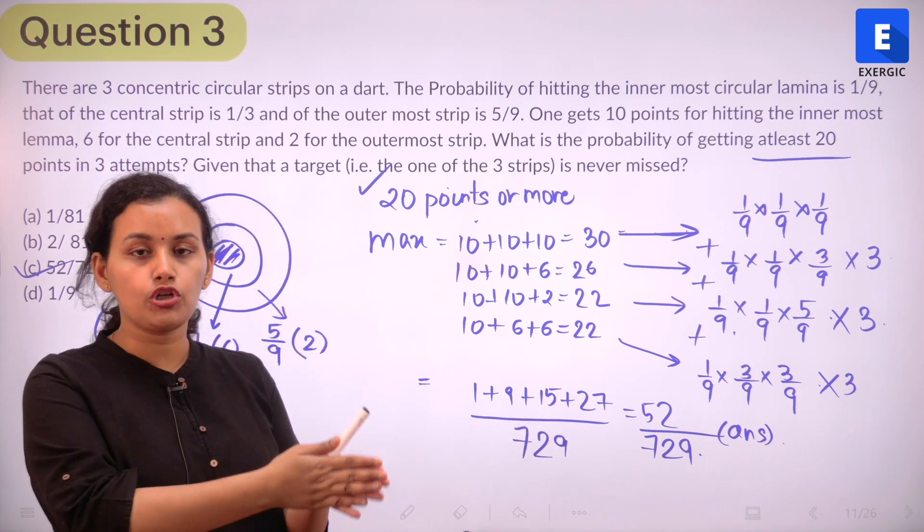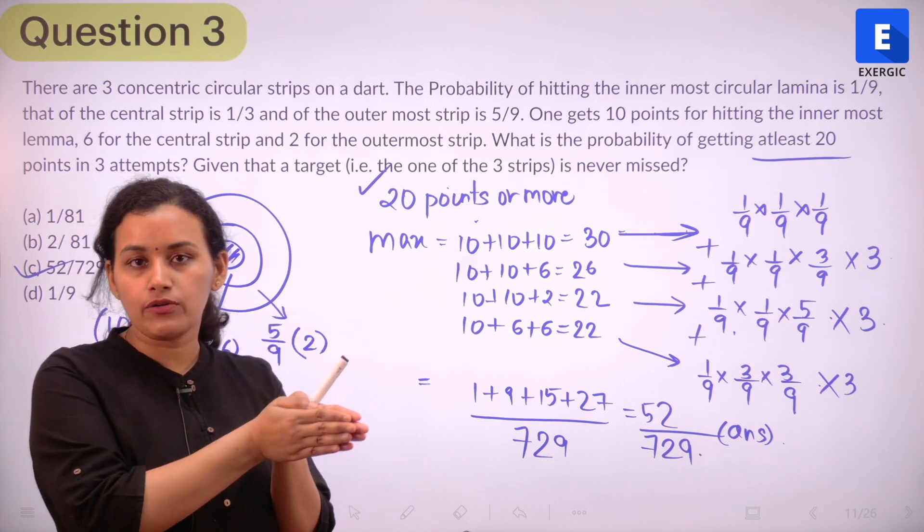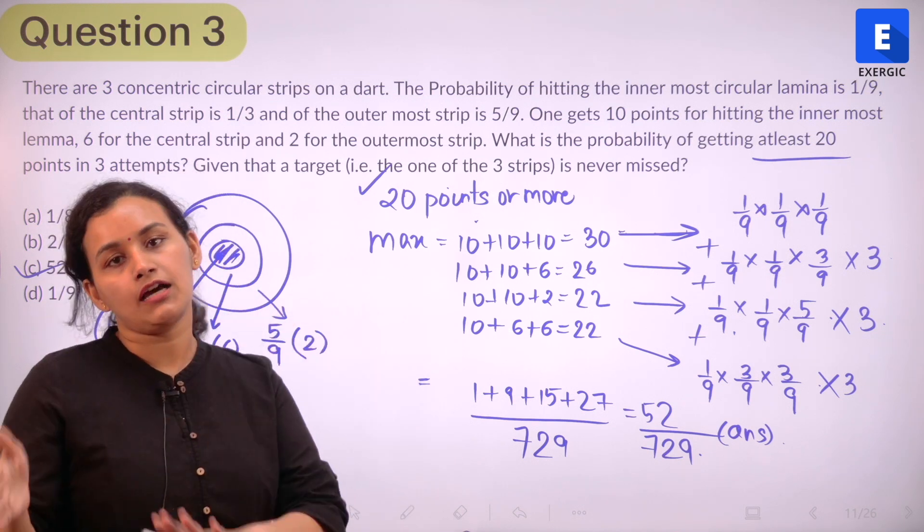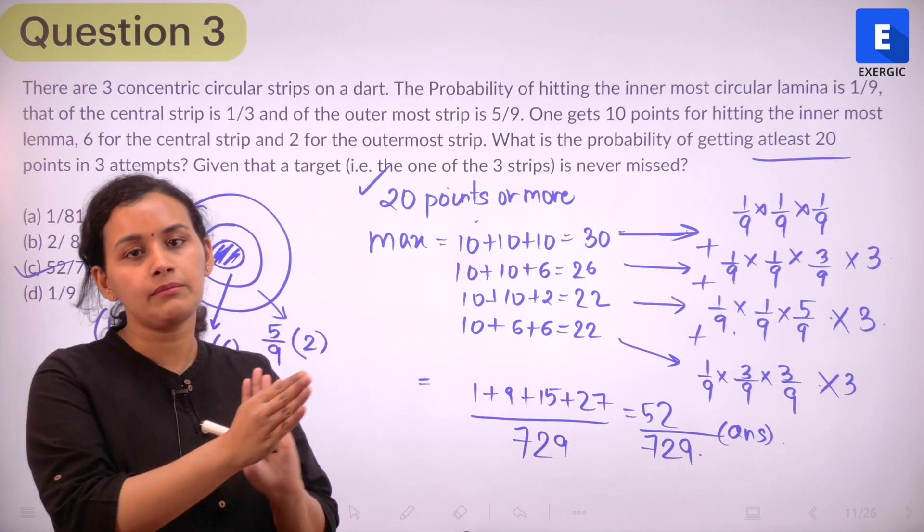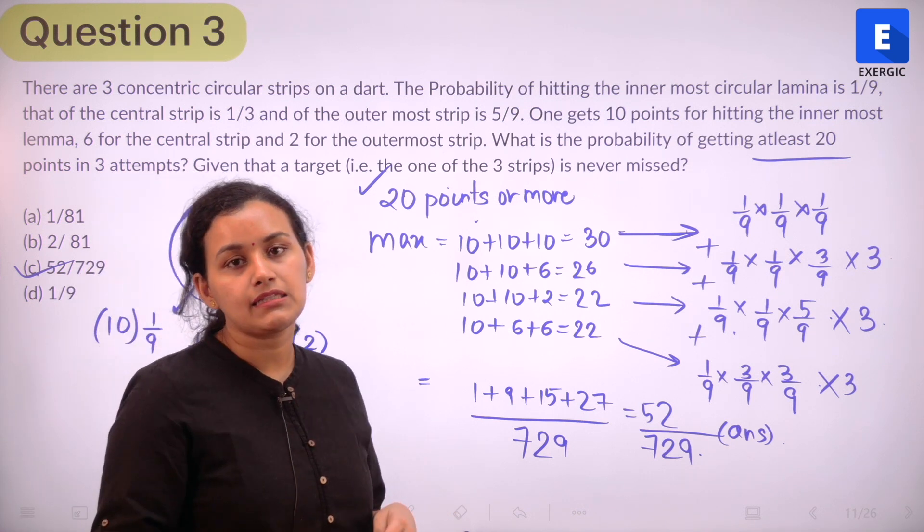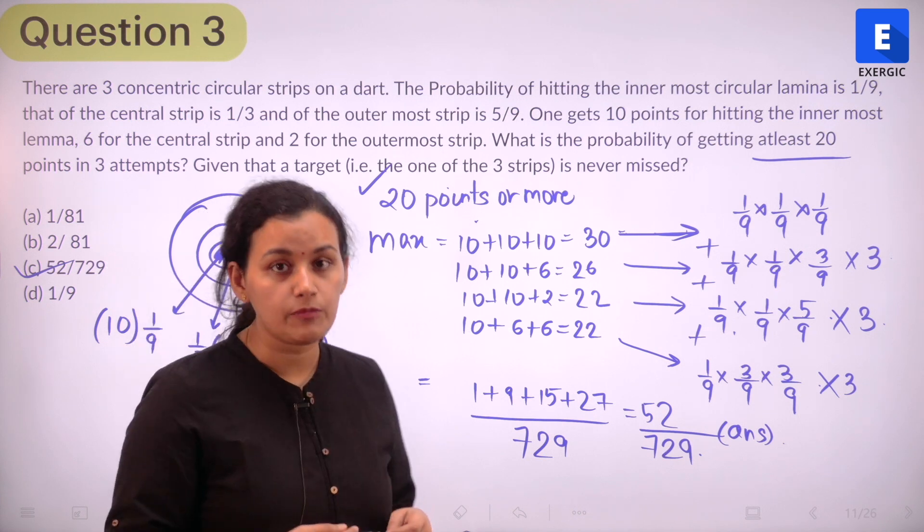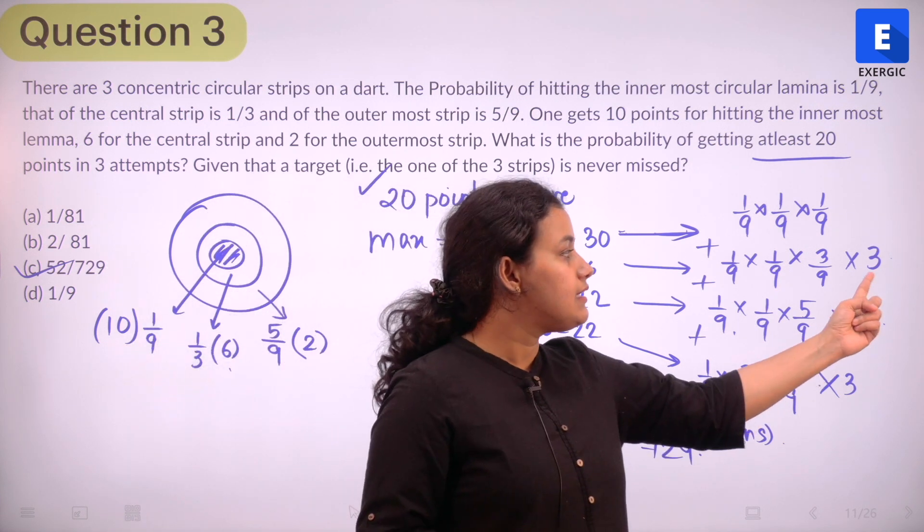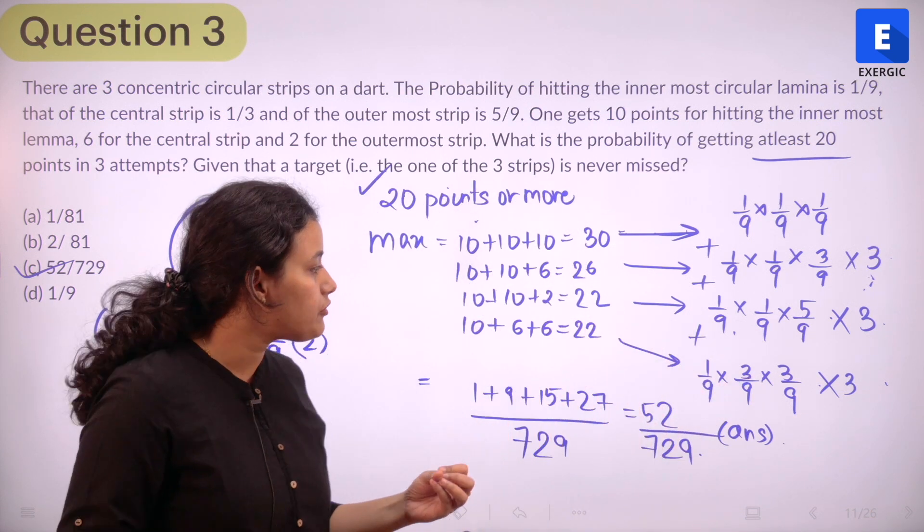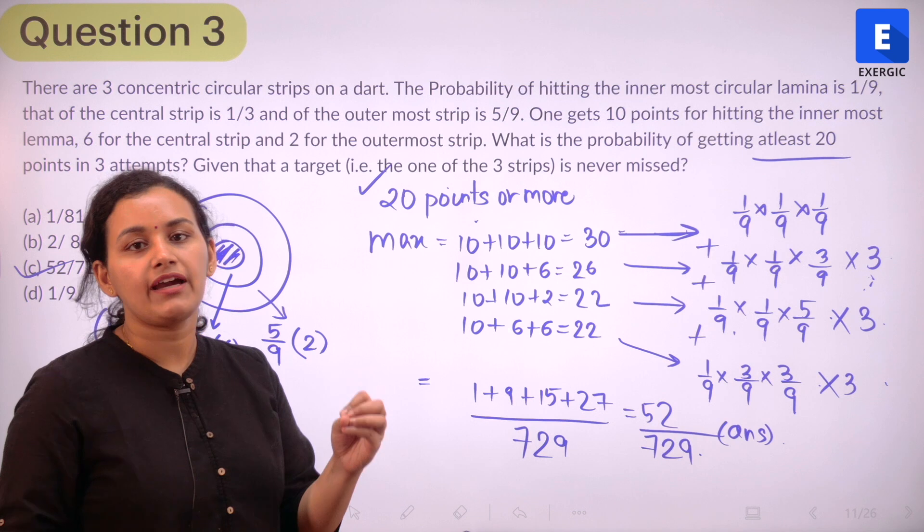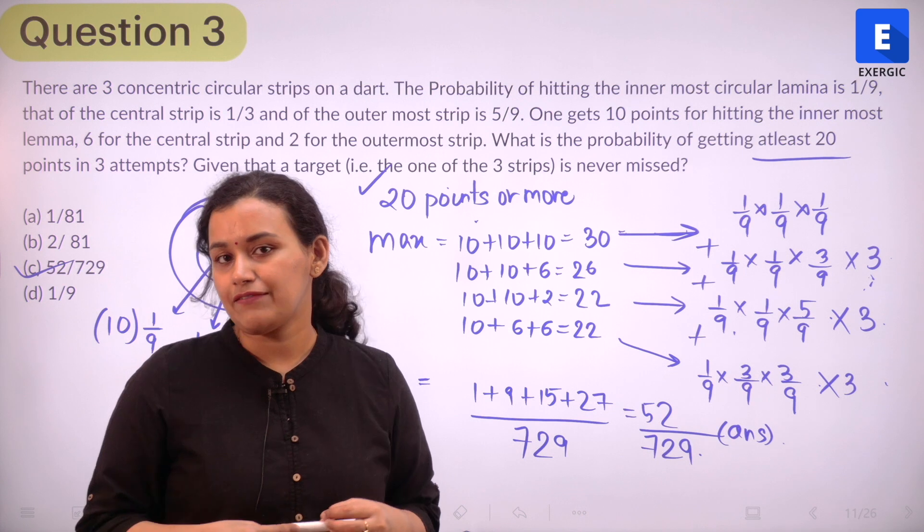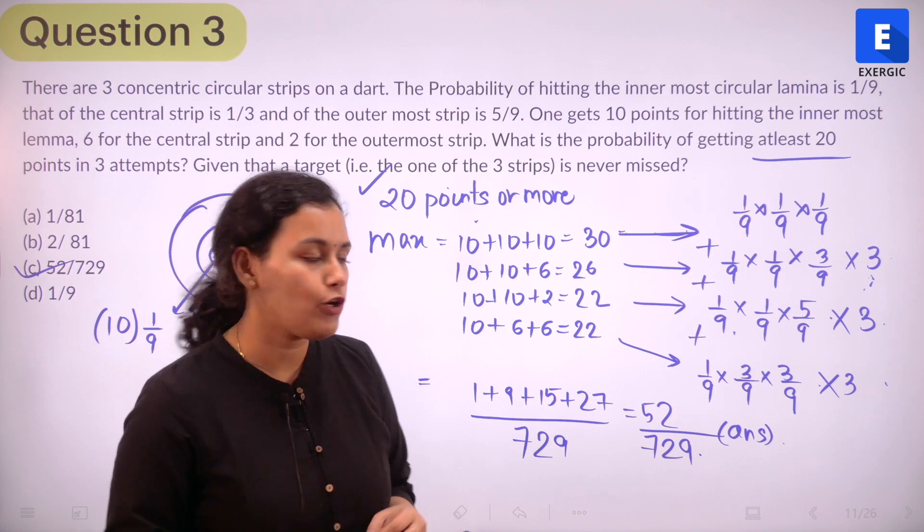So now we associate probability with each instance and we also have to keep in mind the arrangement. So it is possible that the first shot you hit in the innermost, next you hit innermost and last you hit in the middle part or first middle, then the last two innermost, or innermost, then the middle, then the innermost, any fashion is possible, any order is possible. And that is the reason why we need to consider the arrangement or the permutation in that case. And we multiply it with 3. Where does this 3 come from? It comes from 3 factorial by 2 factorial. And if then you simplify, associate probability, add up and you get the final answer as 52 upon 729. I hope this was clear.